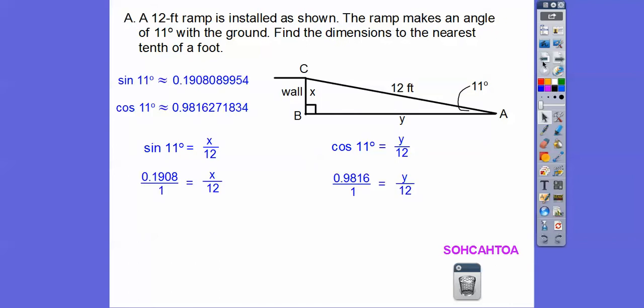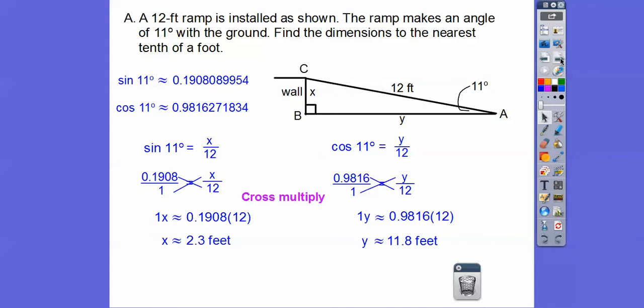The sine of 11 and the cosine of 11 are given right there. We used our graphing calculator. Make sure you are in degree mode. If you're not getting these values, you are not in degree mode. Look for a D or D-E-G. If you have a G or an R or a grad or a rad, that means you're in gradients or radians. Make this over 1, and then we can cross multiply. So 1x equals 0.1908 times 12, and 1y equals this decimal times 12. We get x to be about 2.3 feet, and y is about 11.8 feet.